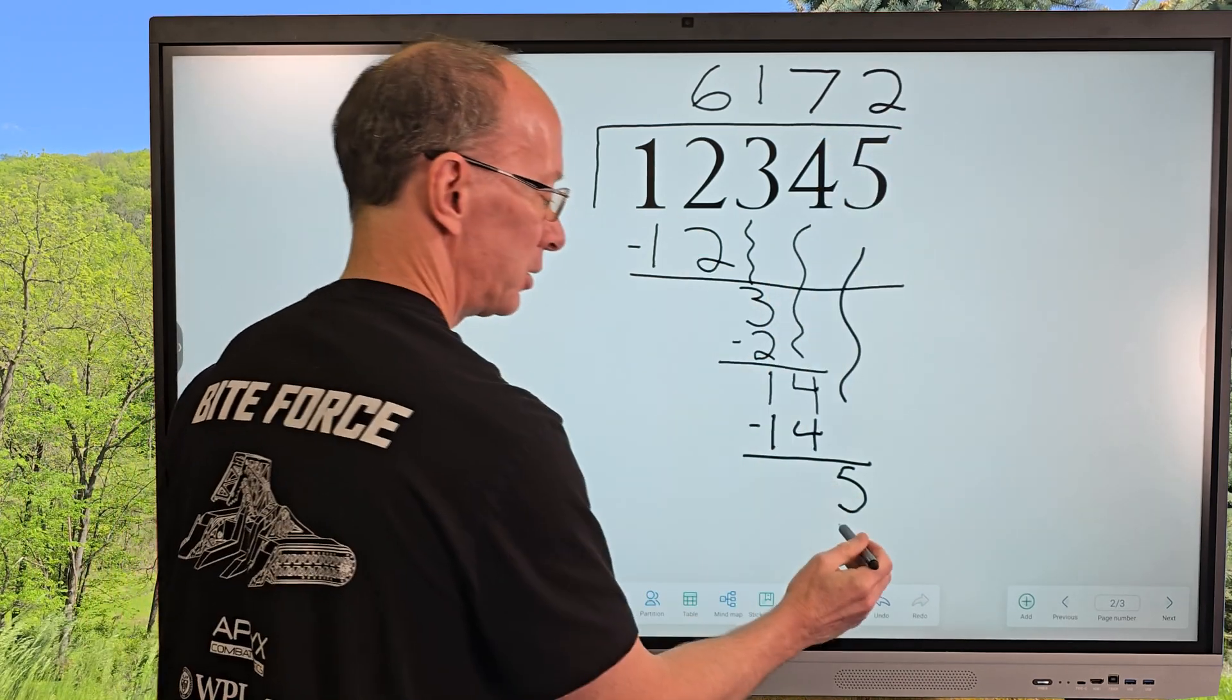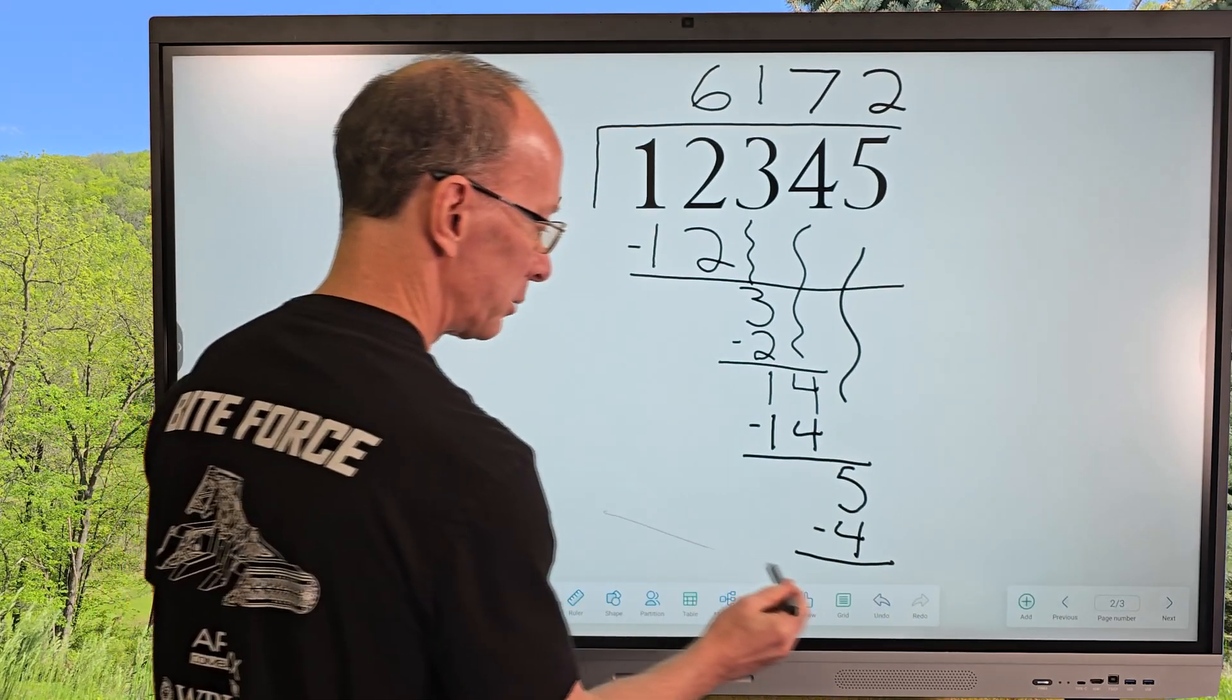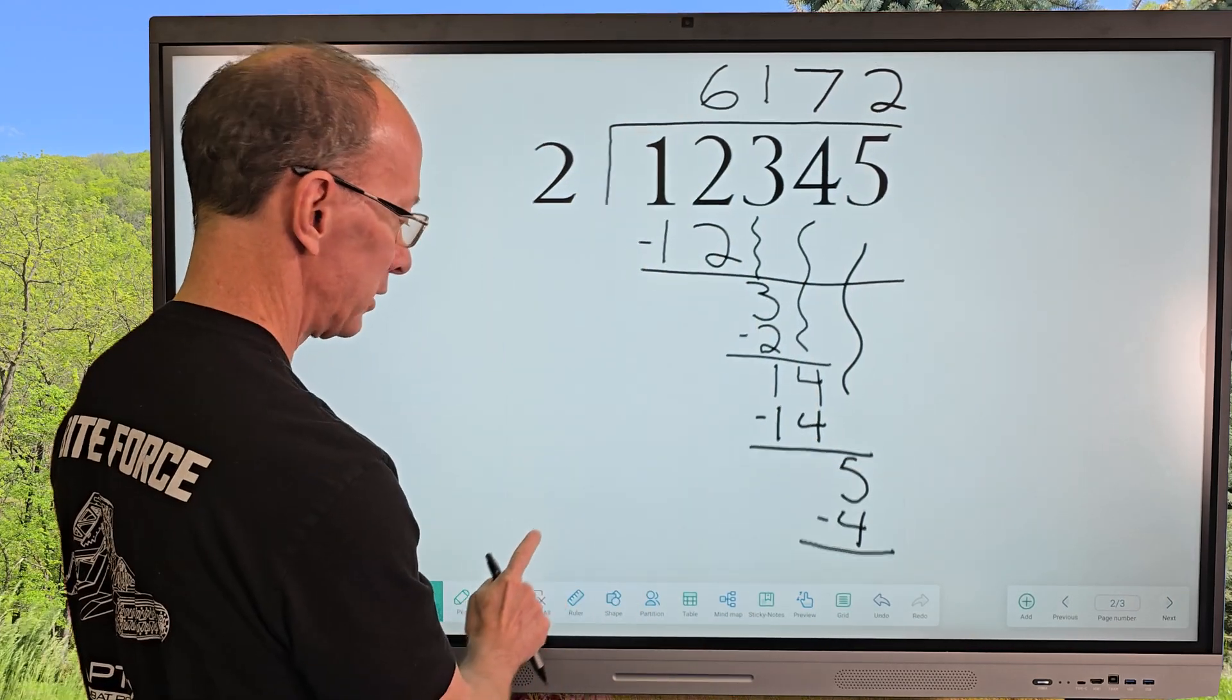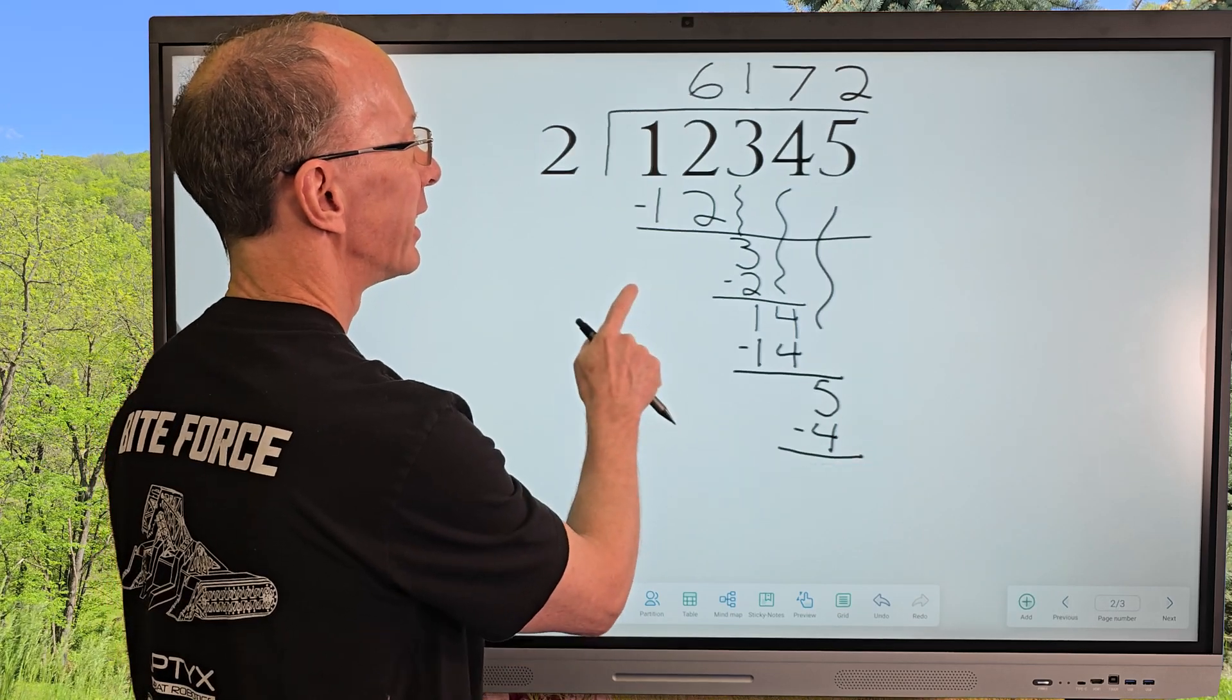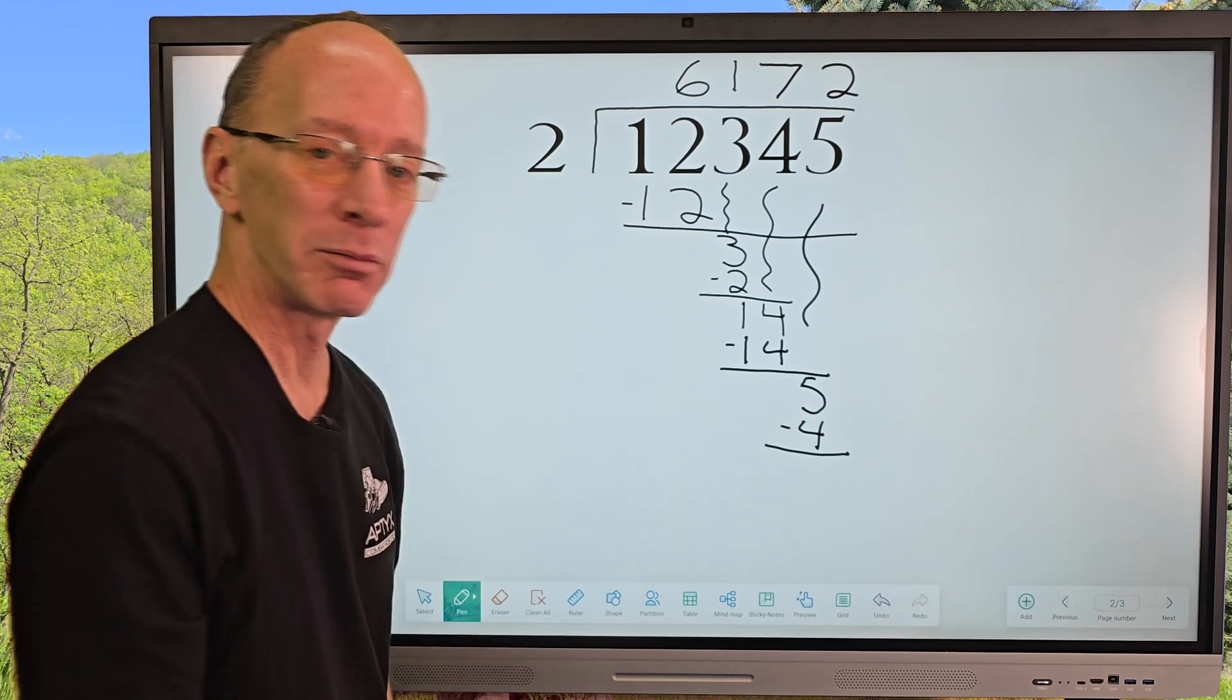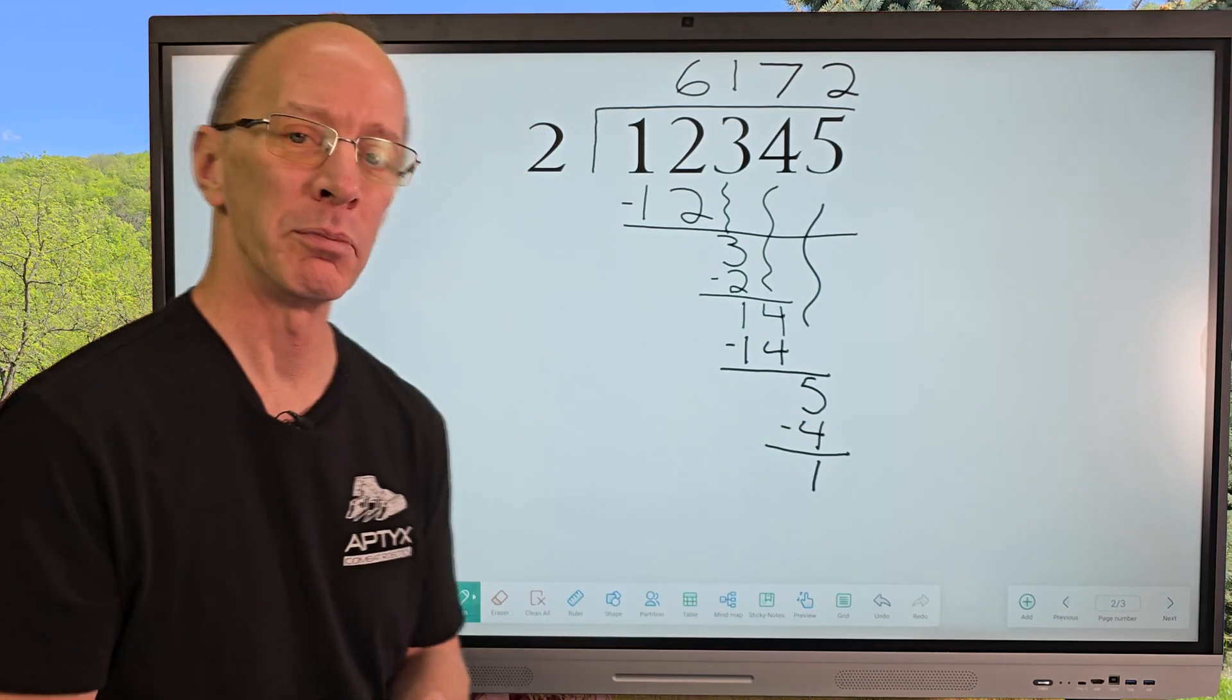And then 2 times 2 equals 4, and I'm going to go ahead and subtract. And I also need to make this a little bit smaller and make that smaller here. Sometimes our division problems get quite big. All right, let's begin. And now I subtract, 5 minus 4 equals 1.